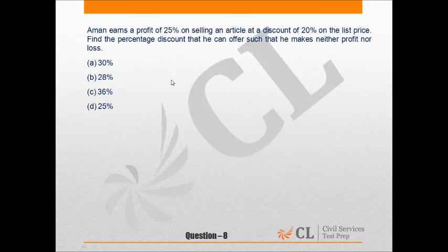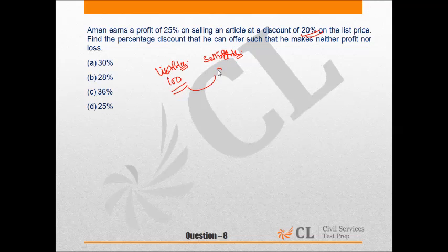Let us suppose the list price is Rs 100. In the question it is given that Amun gives a discount of 20% on the list price, so the selling price after 20% discount is Rs 80.